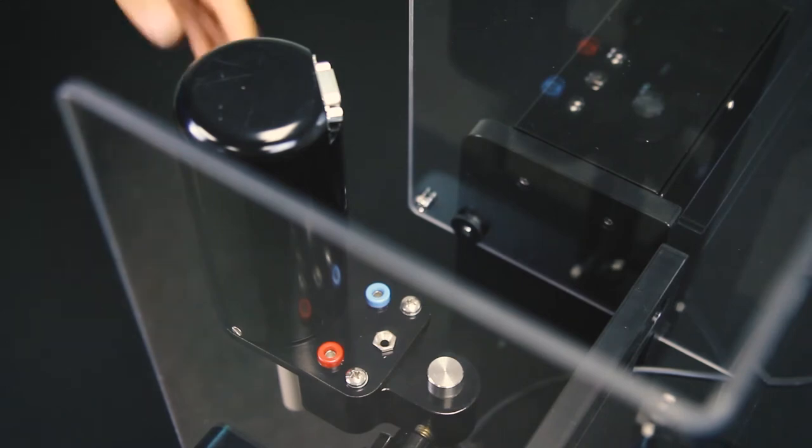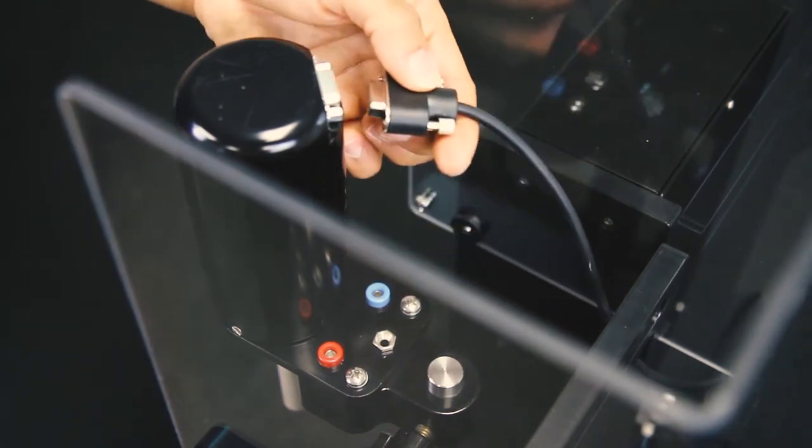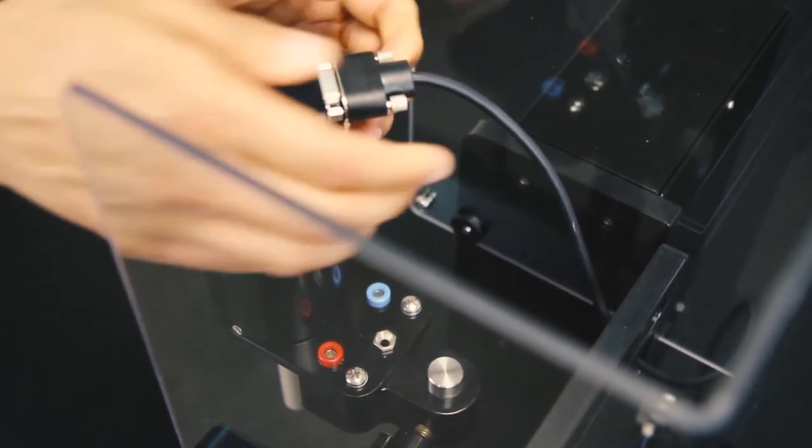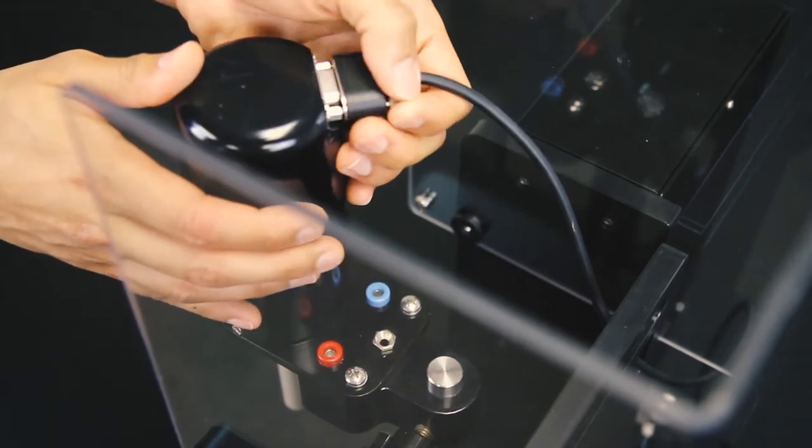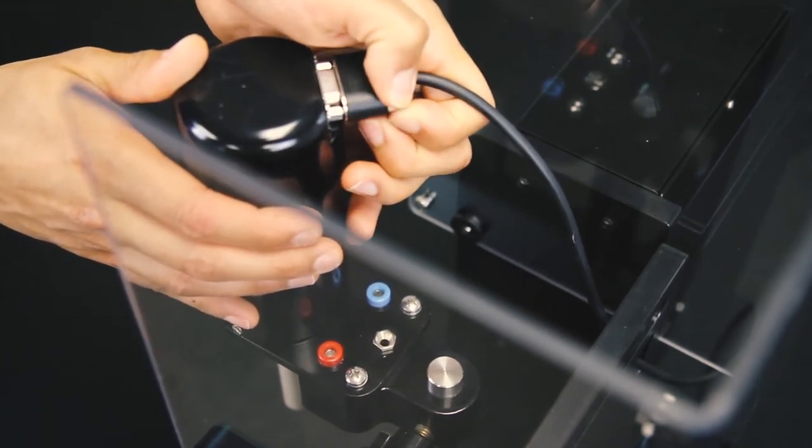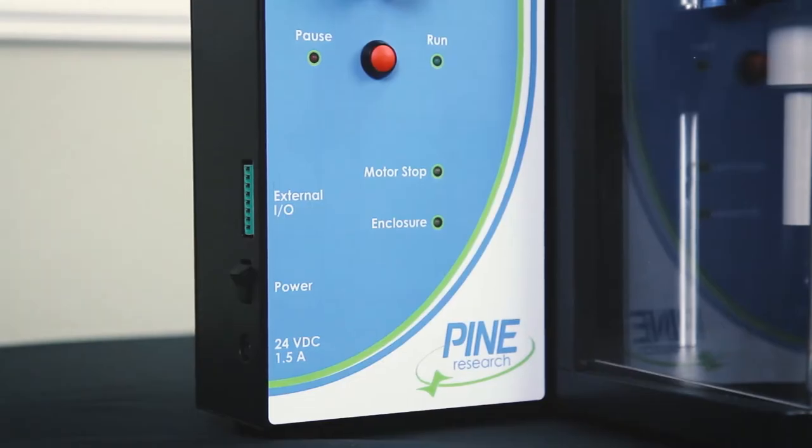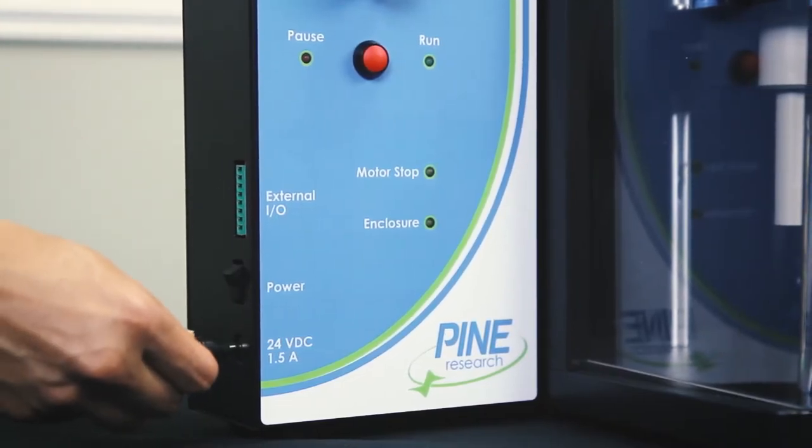Reconnect the motor cable and tighten the two thumb screws with your fingers. Plug the Wave Vortex back in and turn it on.